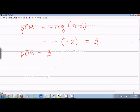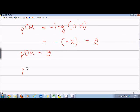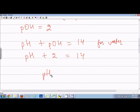to find the pH, what we'll do is use the fact that pH plus pOH equals 14 for water. Therefore, if we substitute, pH plus 2 equals 14, so the pH for the solution will be equal to 12.